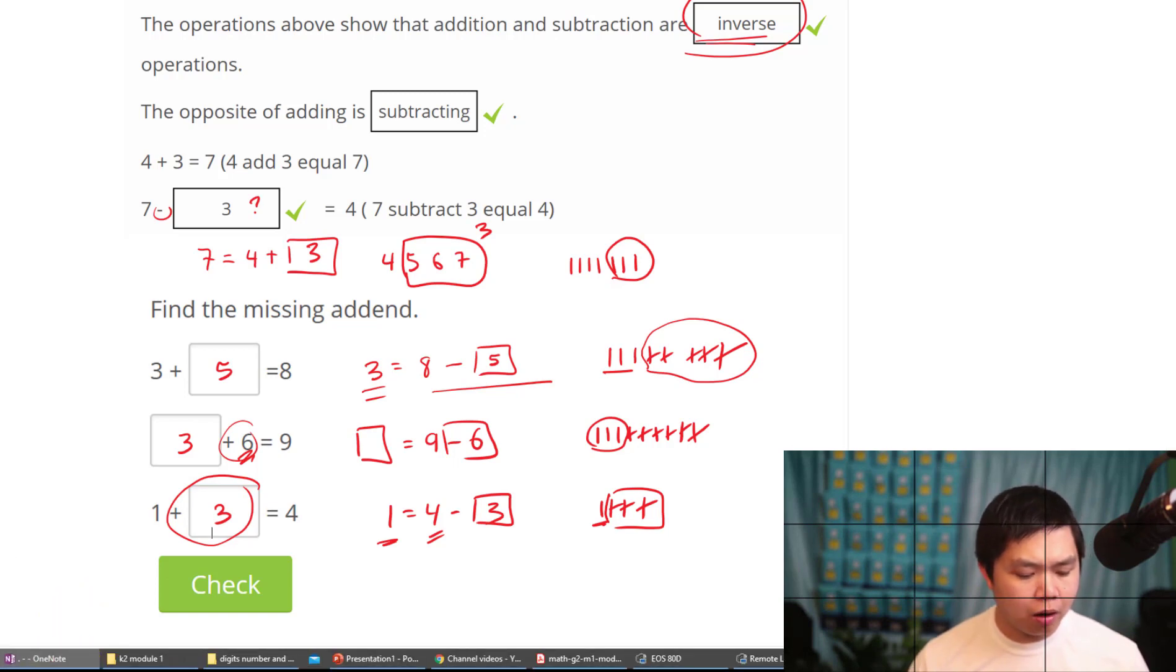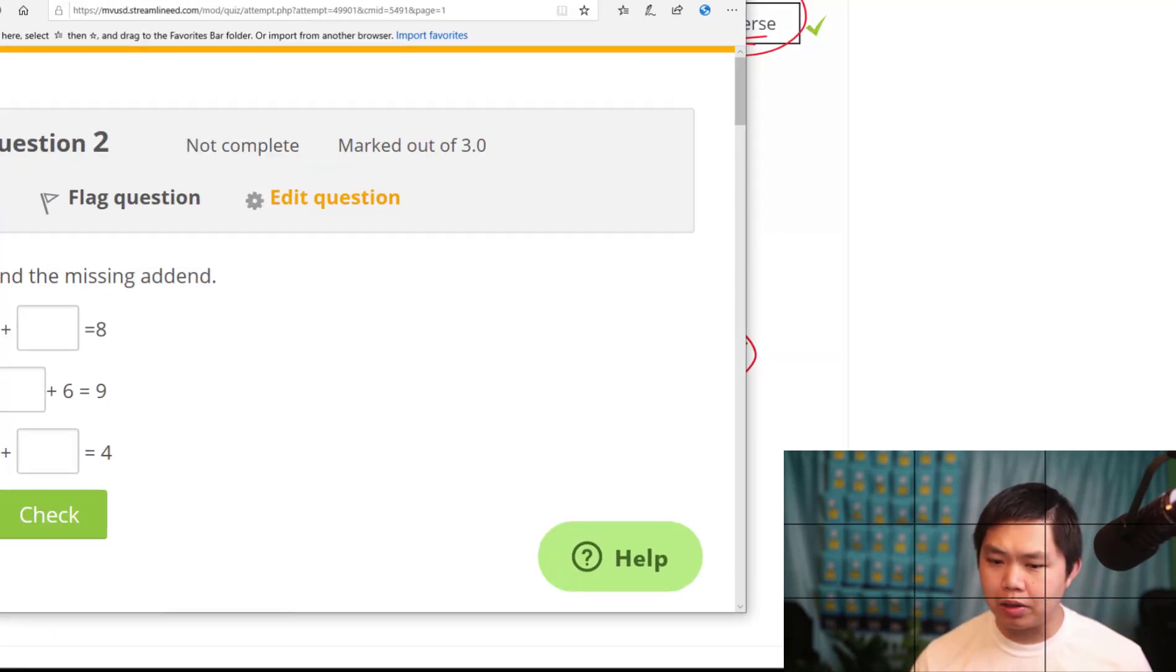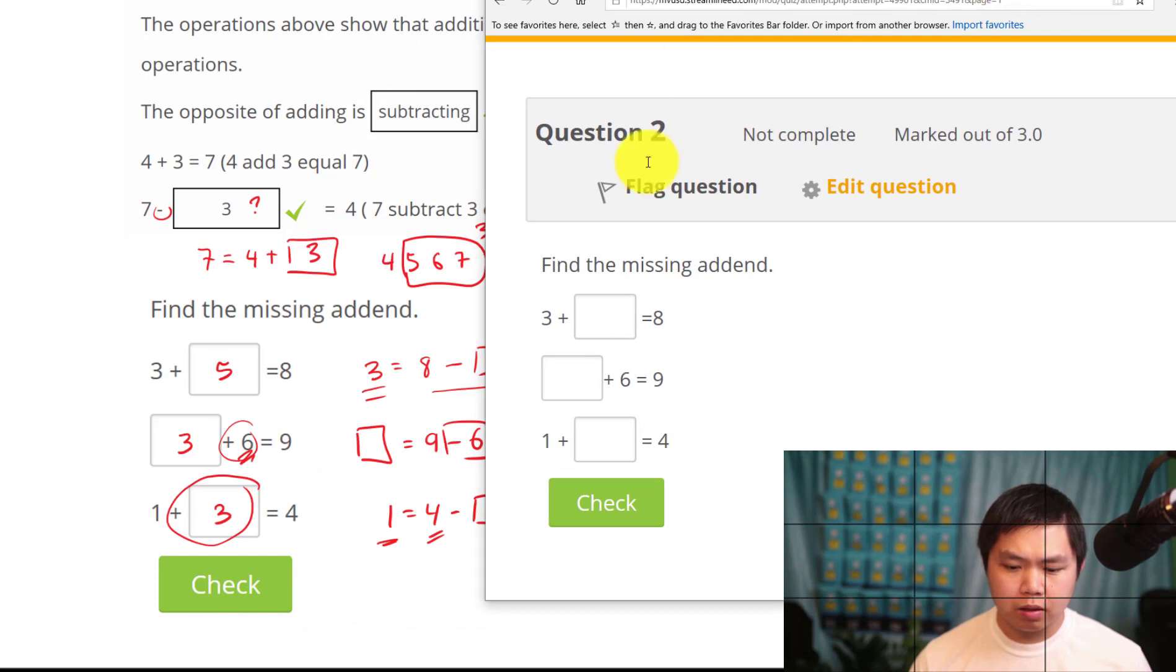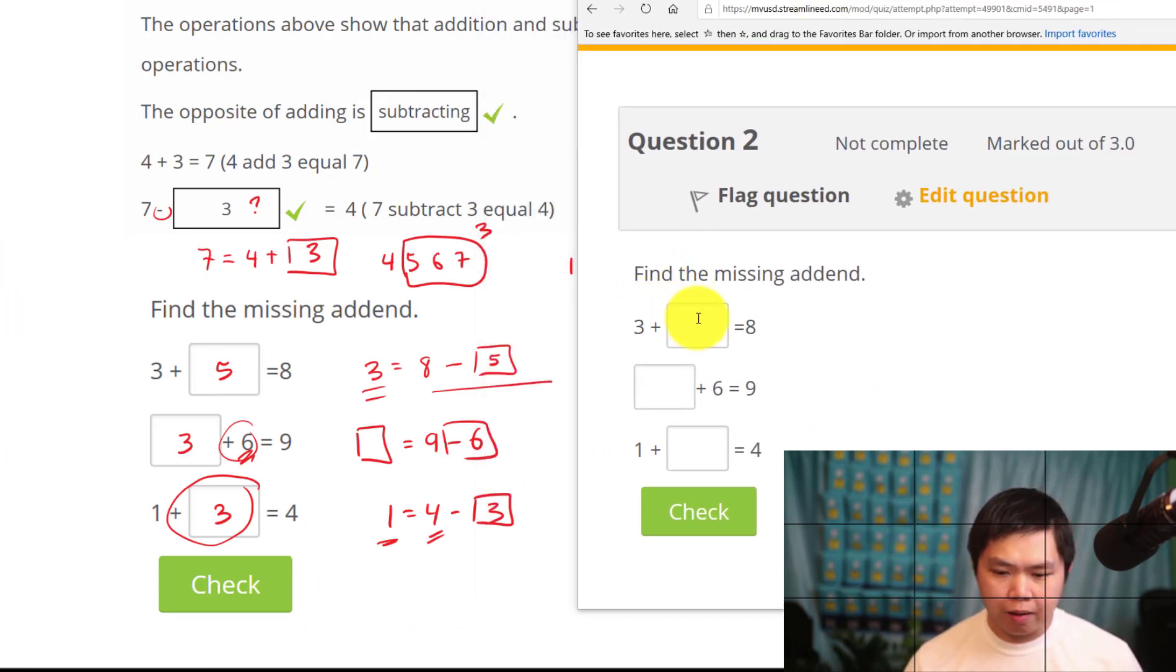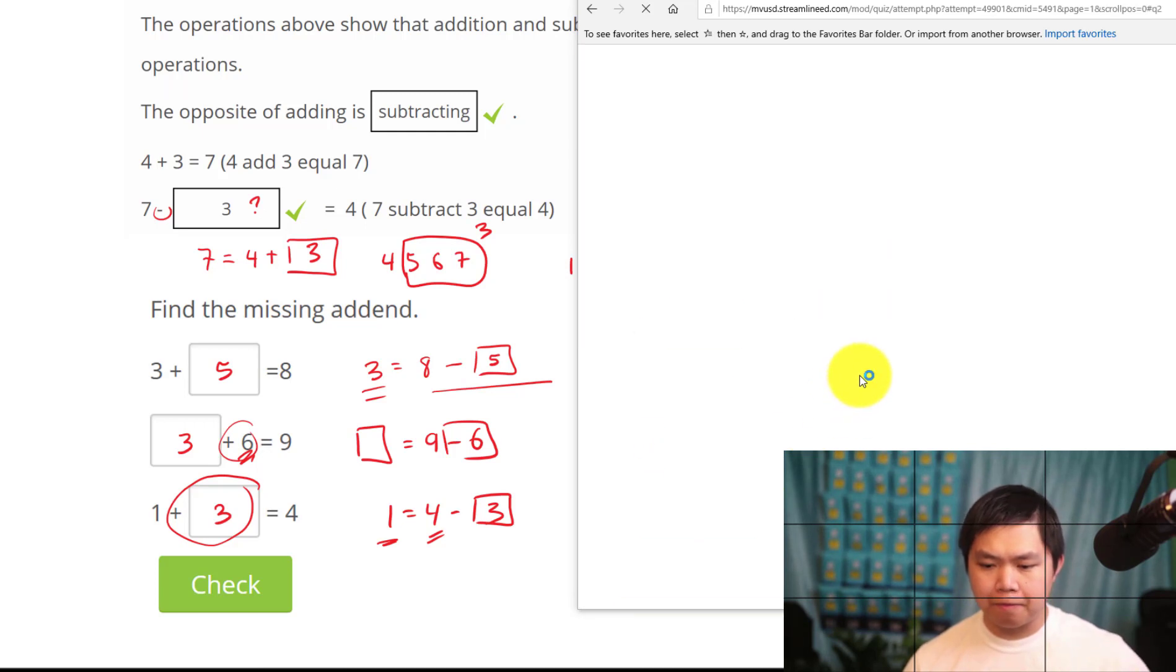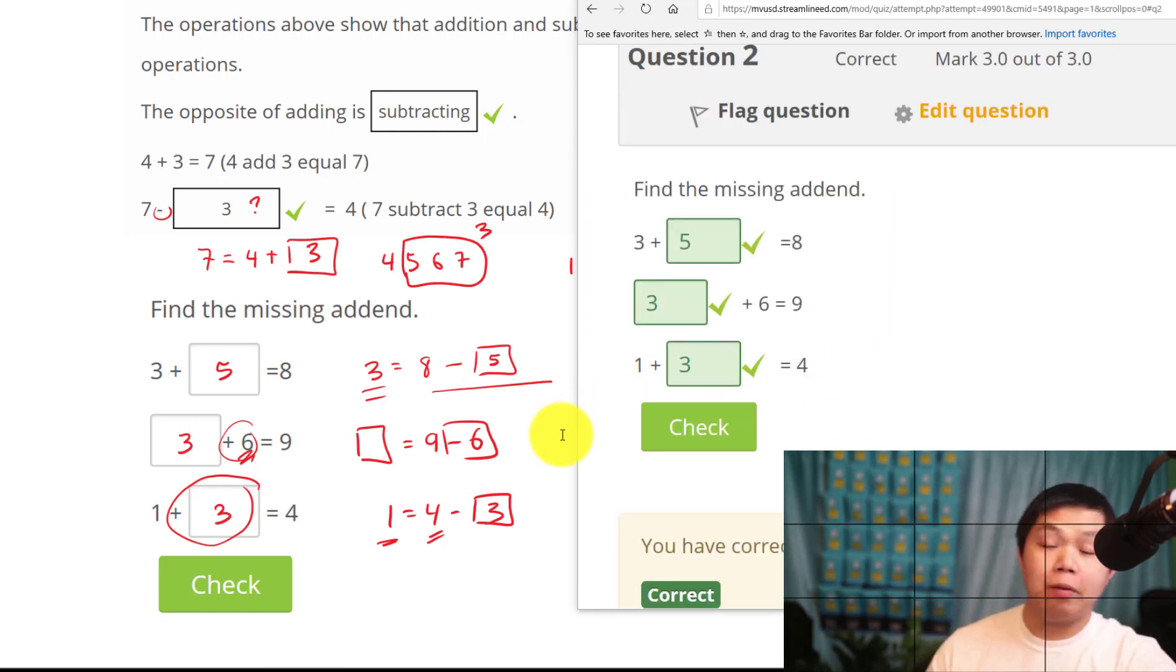Now let's plug in our practice problems to see if our answer is correct or not. So here we have 5. 3 plus 5 is 8. 3 plus 6 is 9. And 1 plus 3 is equal to 4. And there you go. And then we check our answer.